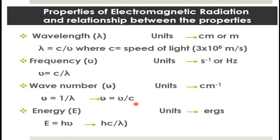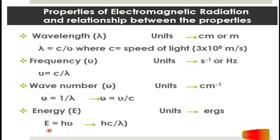Each electromagnetic radiation is also associated with energy, represented by the symbol E. For one photon of radiation, the units of energy are ergs. Energy can be represented mathematically as E equals h-nu, where h is Planck's constant. Substituting nu equals c over lambda, this equation becomes E equals hc over lambda.